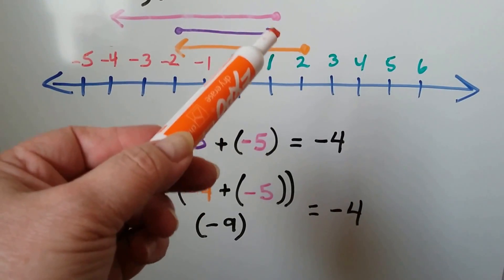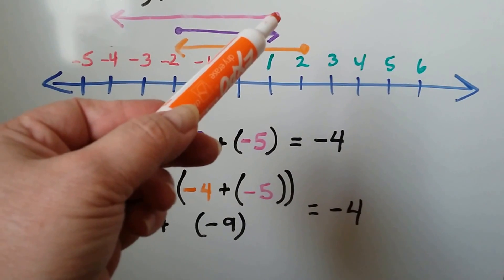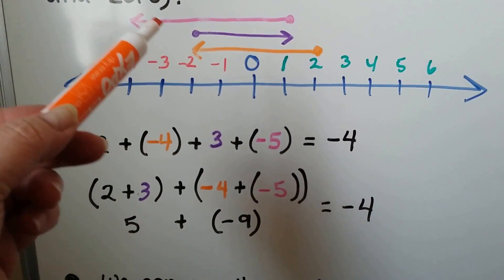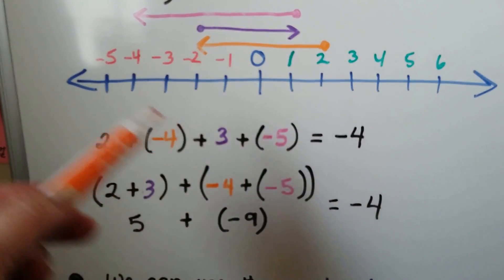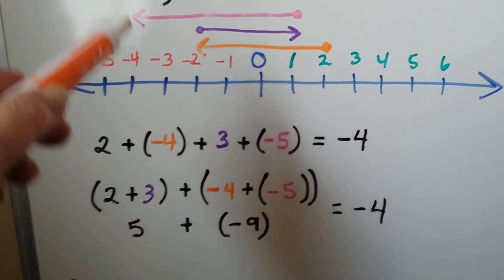Then we end up at a positive 1 and we're going to go 1 2 3 4 5 to the negative. So we're subtracting 5. We can see that brings us to a negative 4.